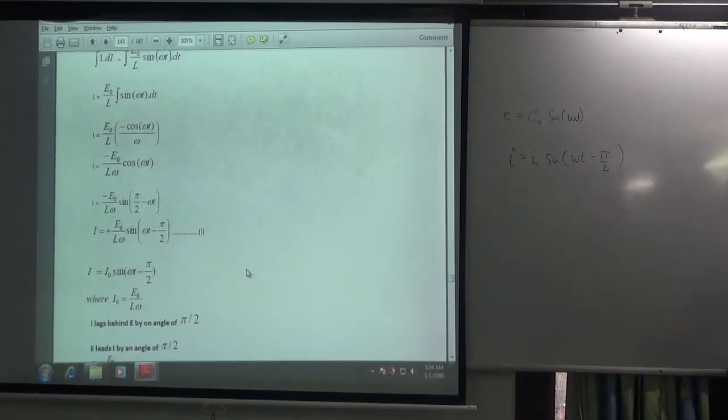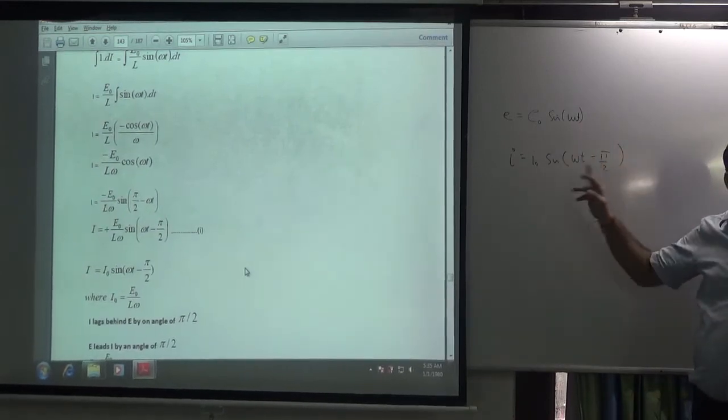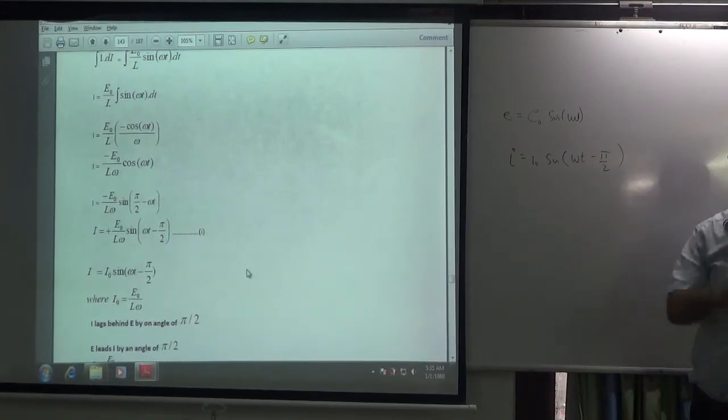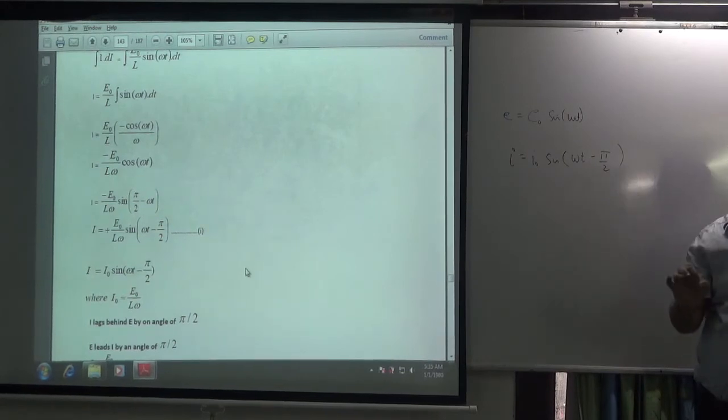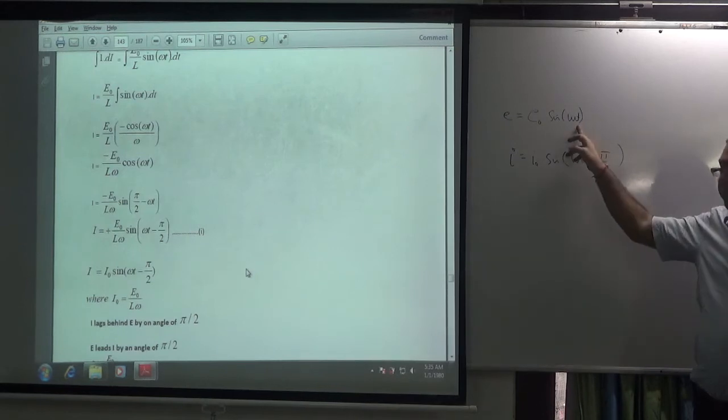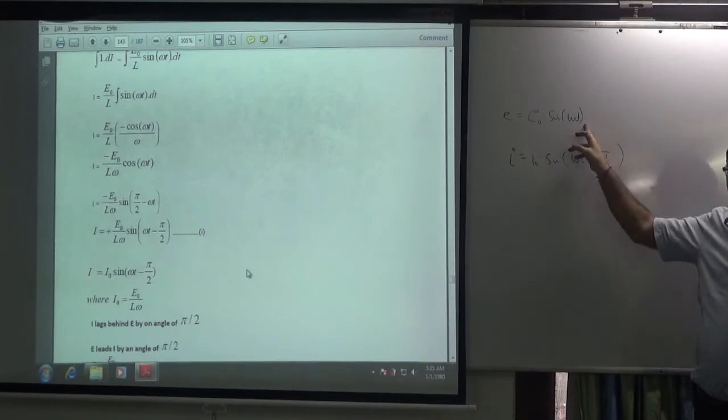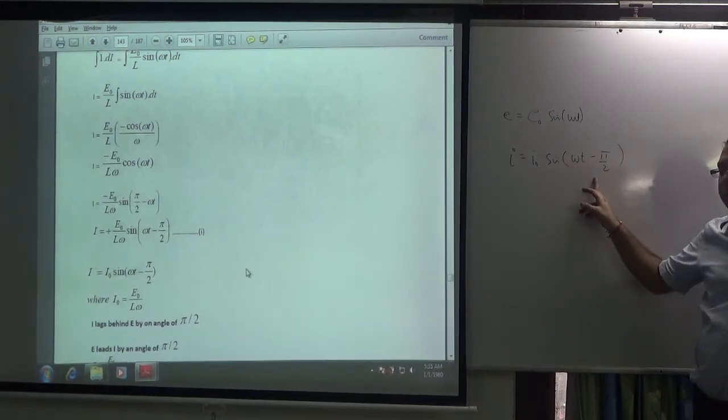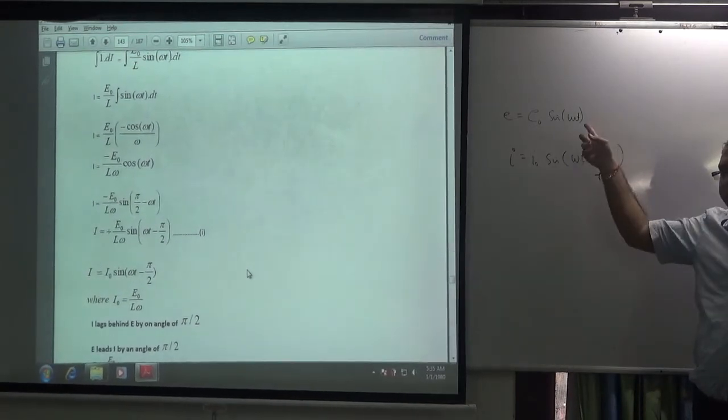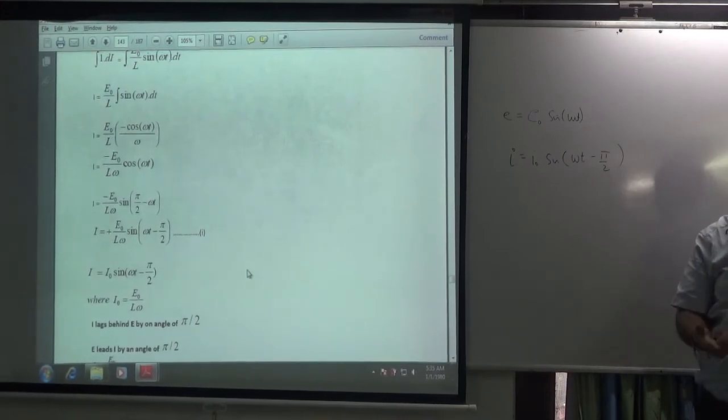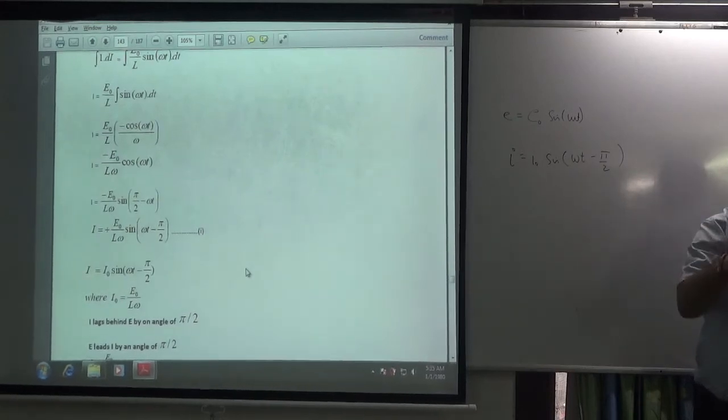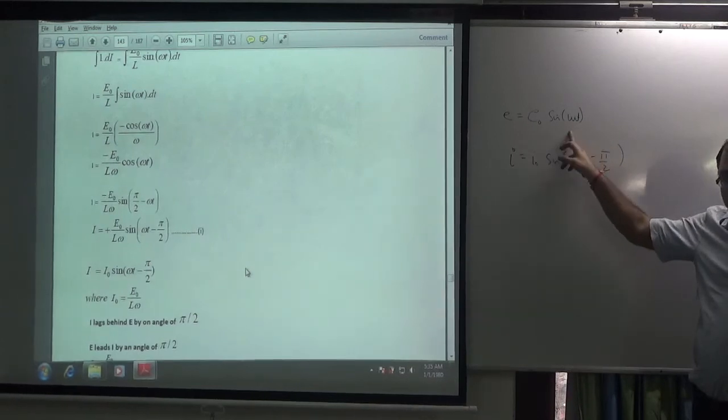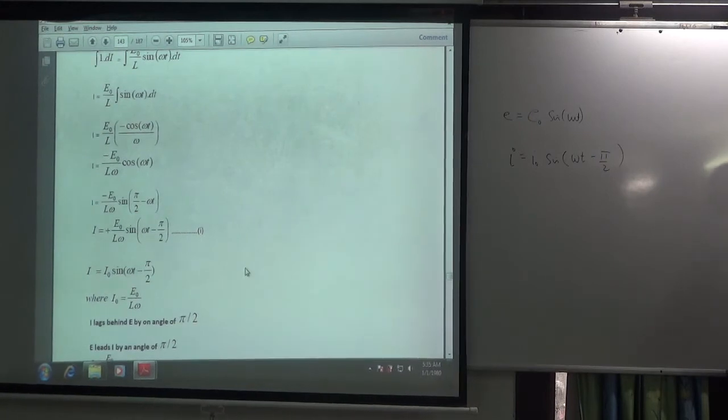So I have EMF and current both converted into sine. EMF angle is ωt, and current angle is ωt minus π/2. So what can I say? In only inductor, EMF angle or current angle: EMF angle π/2 is ahead. That means current lags the phase of current lags phase of EMF by an angle of π/2, or EMF leads current by an angle of π/2. So this is a very important statement.